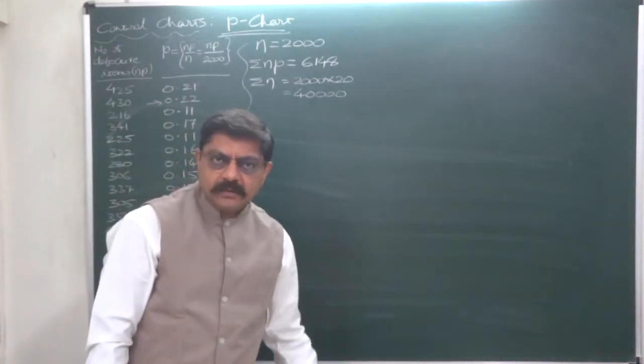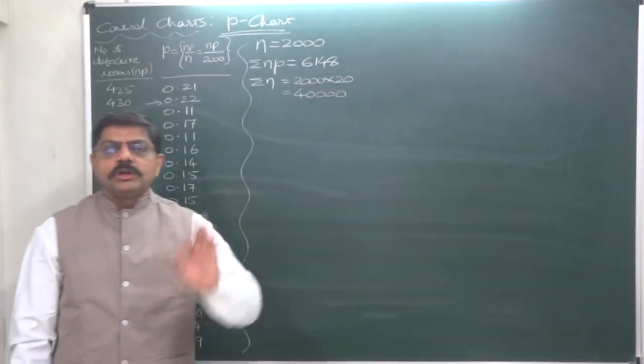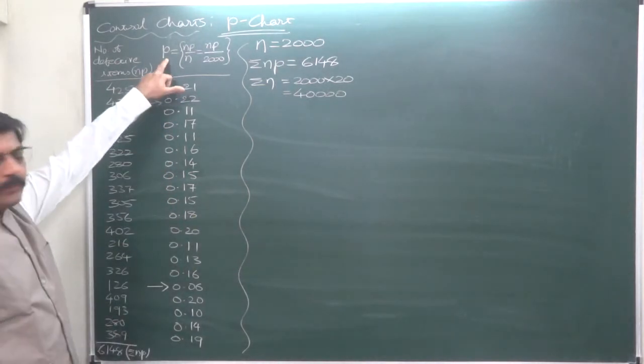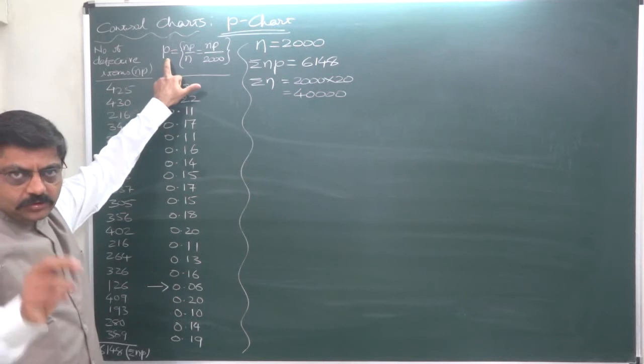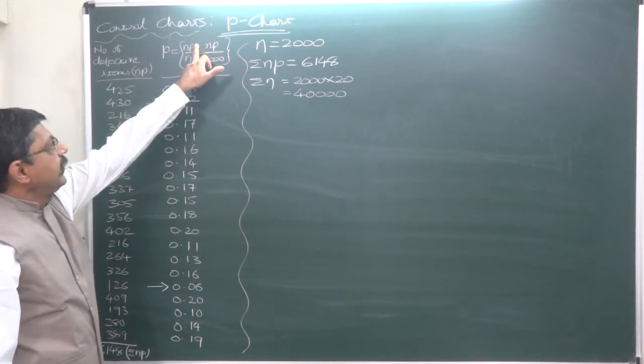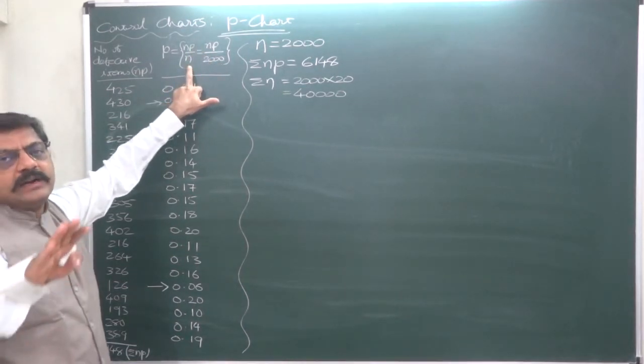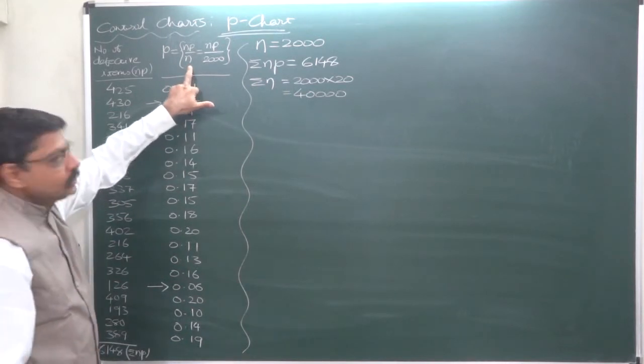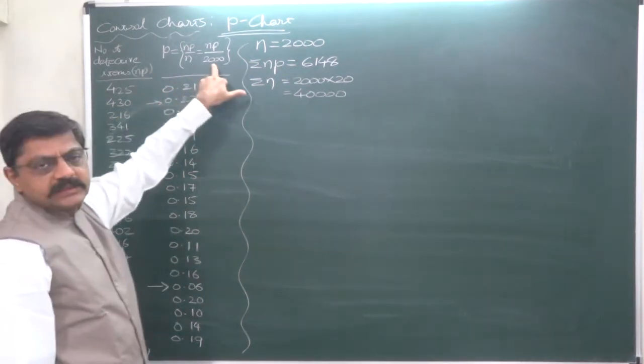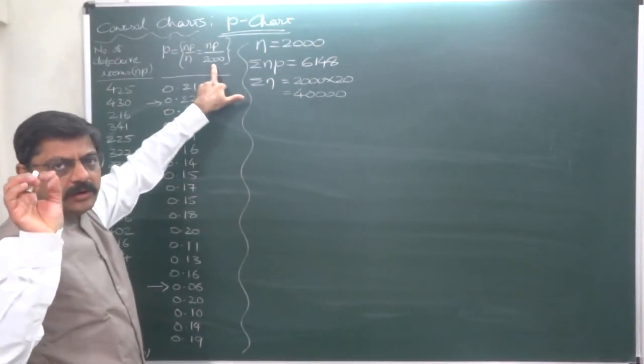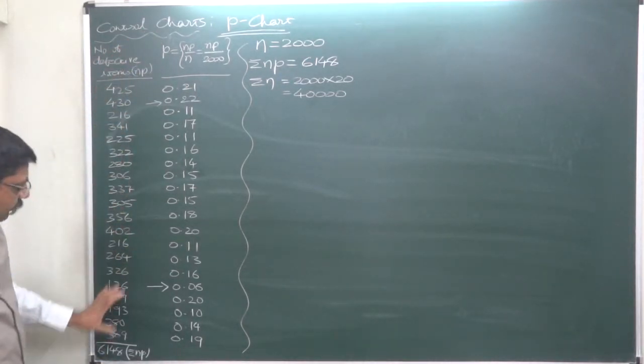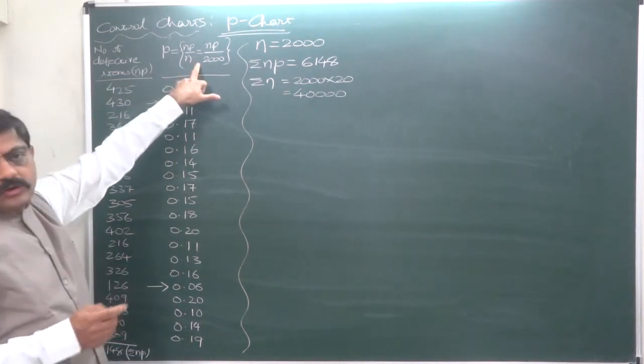But first of all, let us discuss what is P. P stands for proportion, proportion of defectives in each and every sample. That is P. P means proportion of defective units or defective items in the sample. That means number of defective items divided by sample size. That gives us the proportion of defective items in the sample. So we have number of defective items in particular sample and we know the sample size, common sample size 2000. Each sample contains 2000 items. So we can calculate the value of P for each and every of the 20 samples by this formula.